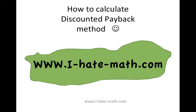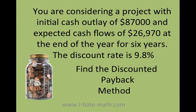Hi guys, welcome to our section on how to calculate the discounted payback method. In this problem, you're considering a project with an initial cash outlay or investment of $87,000 and expected cash flows of $26,970 at the end of each year for six years. The discount rate is 9.8 percent.